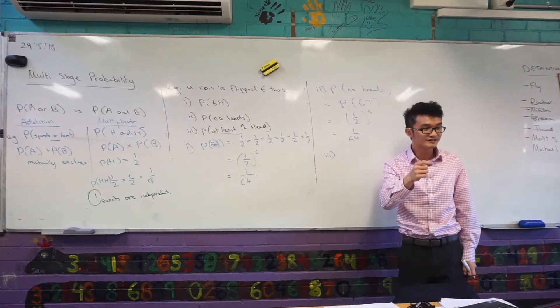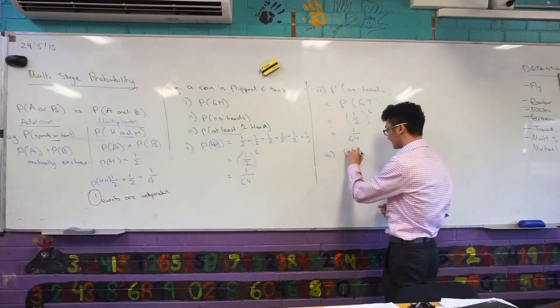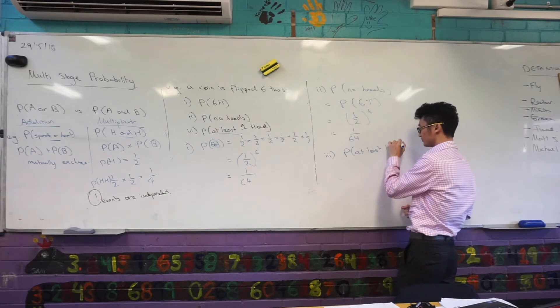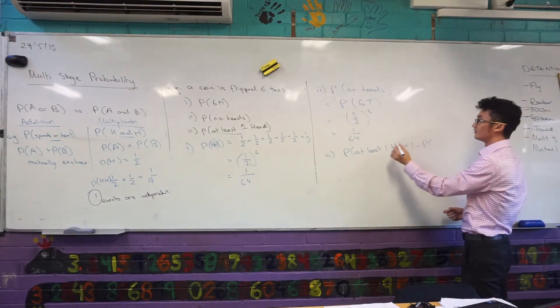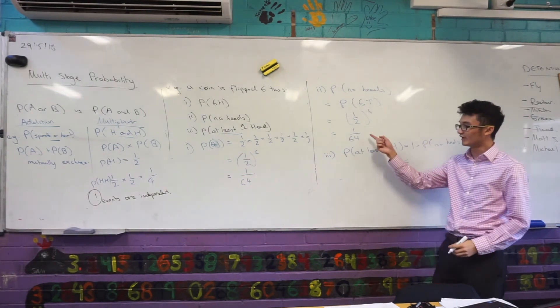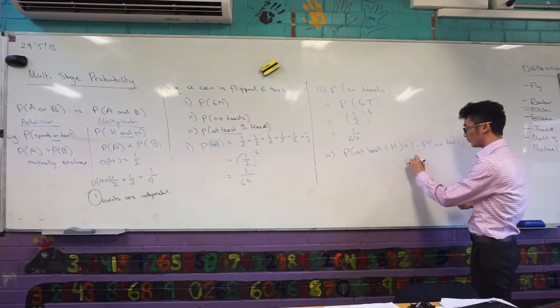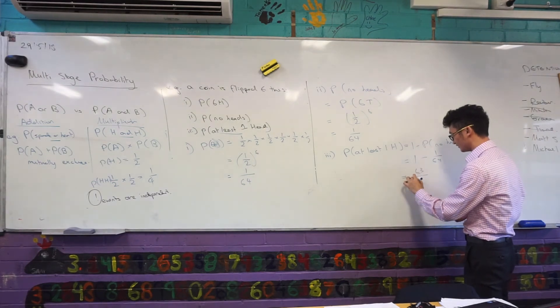So, any time I see at least, I'm thinking about complement. So, let me just write what that statement would be. The P of at least one H, that would equal to one minus the P of no H. Well, no heads. Funny enough, I already have that, don't I? That's one over 64. So, one minus one over 64, that's just 63 over 64.